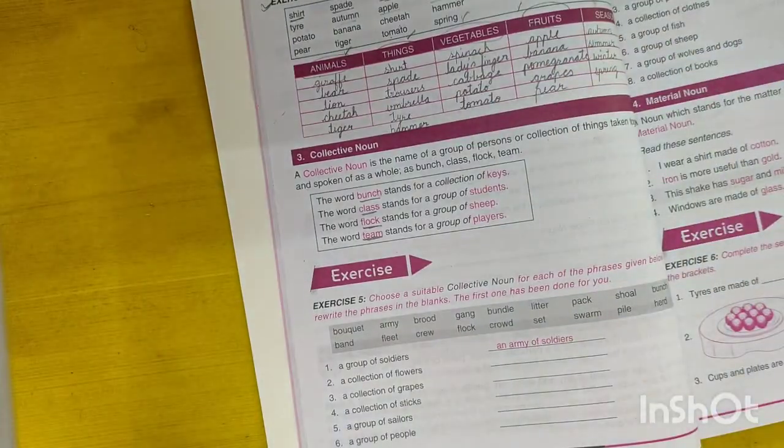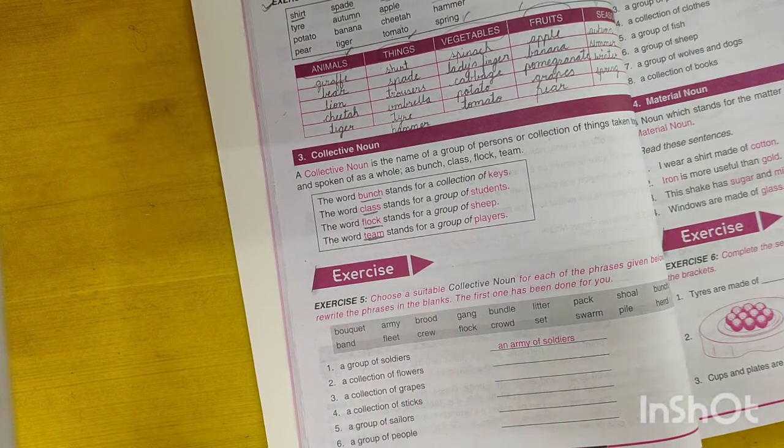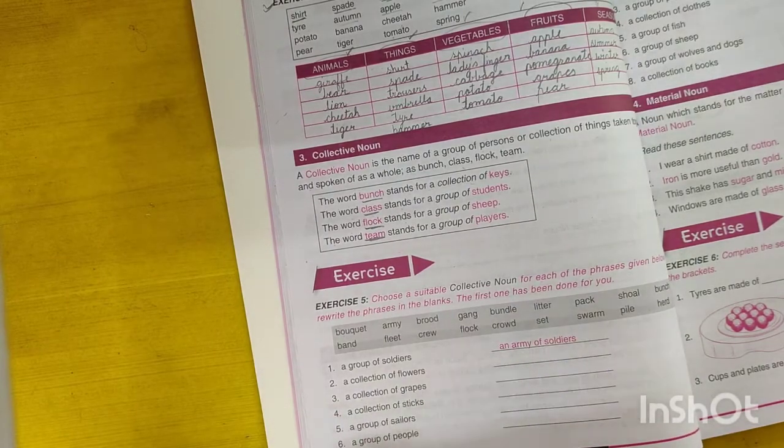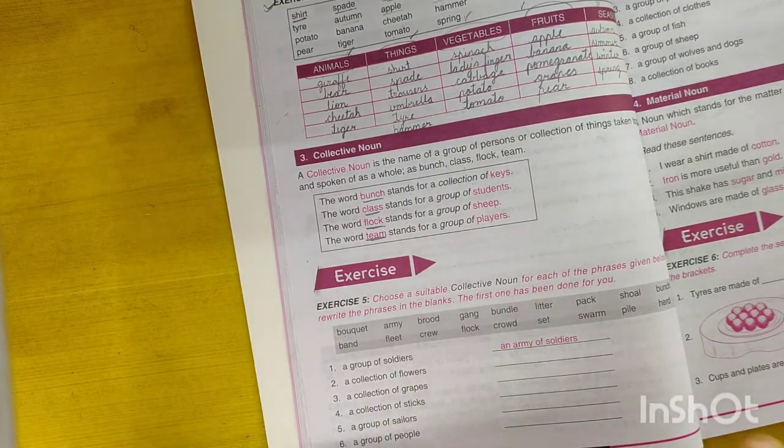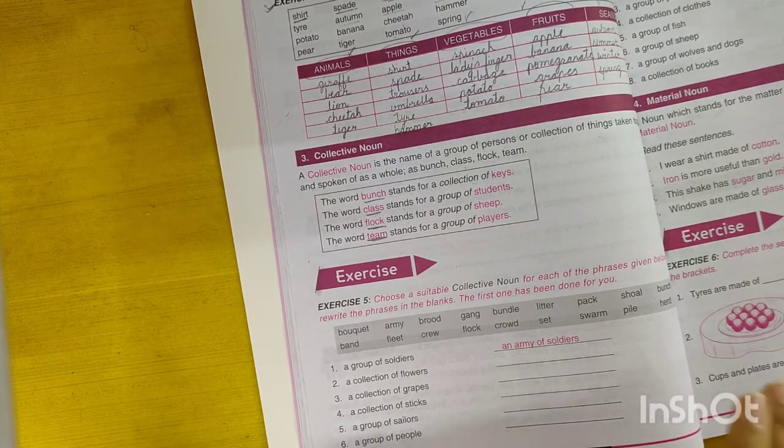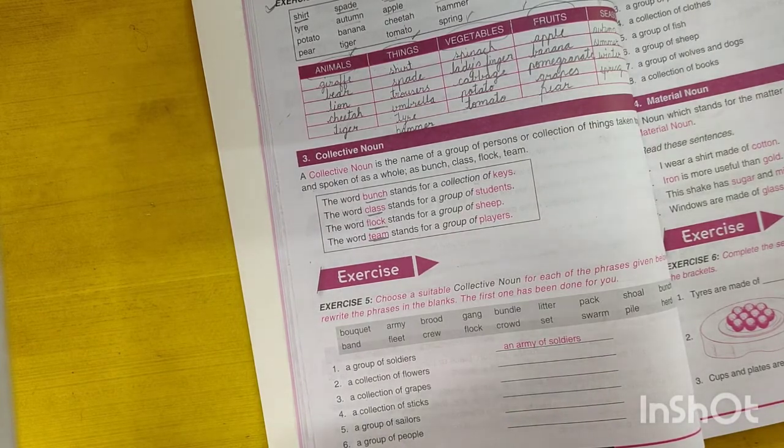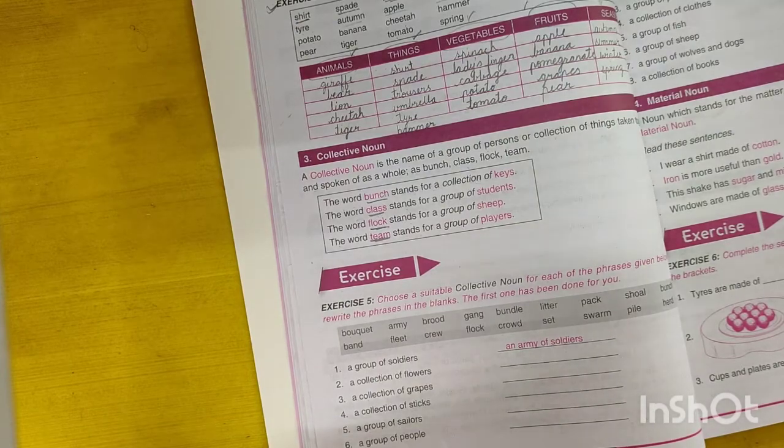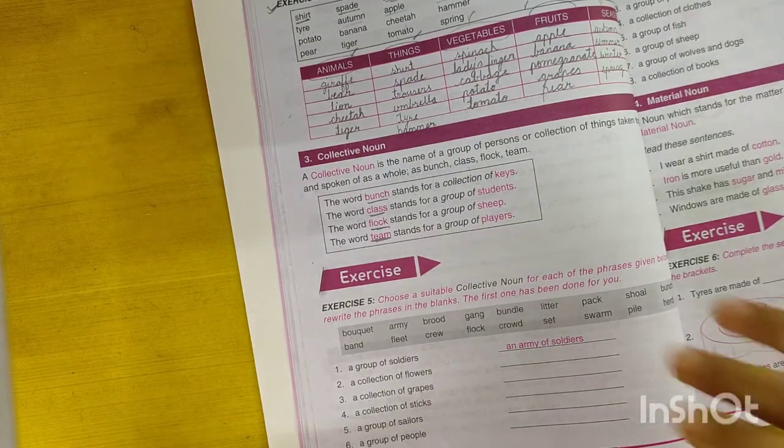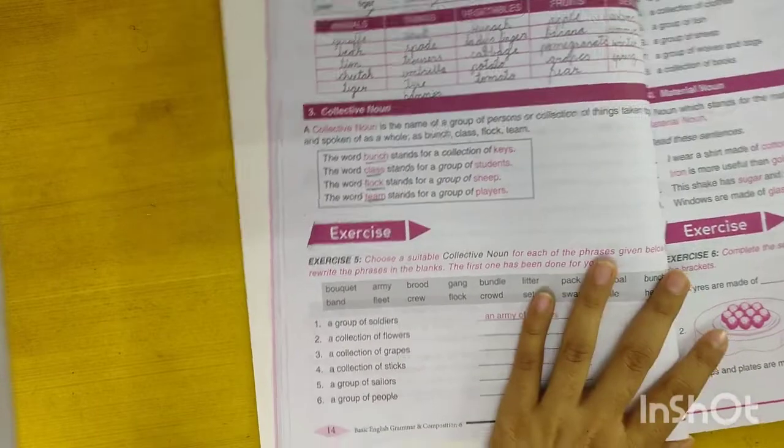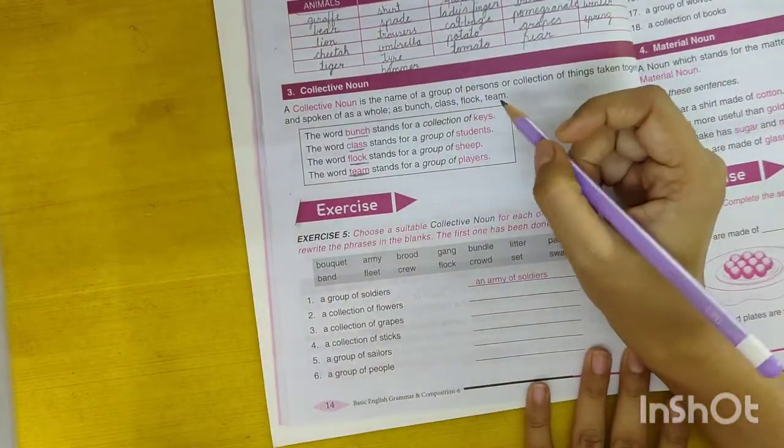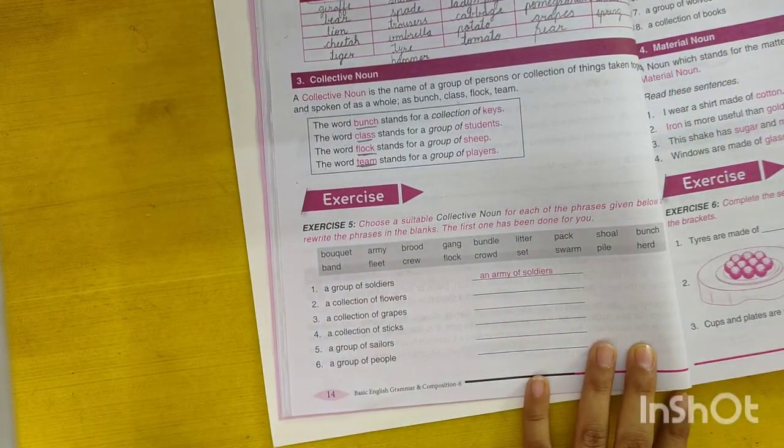Collective nouns are called when a collection is collected. For example, bunch of keys, class of students, flock of sheep. When many people or things are grouped together, we use collective nouns. For example, a bunch of grapes.